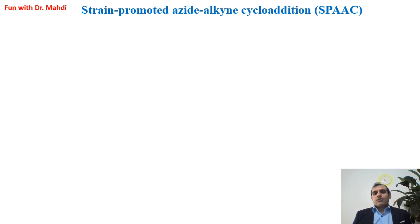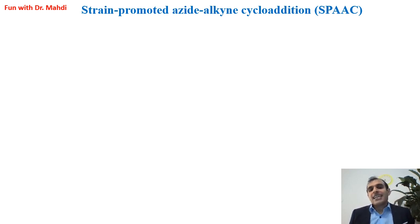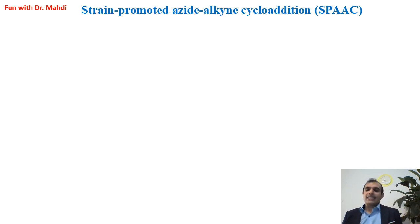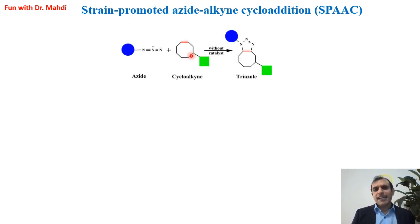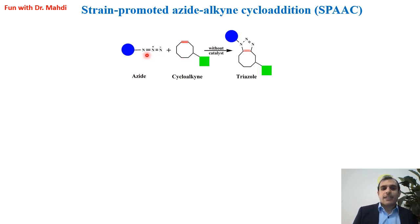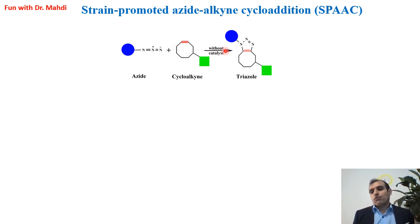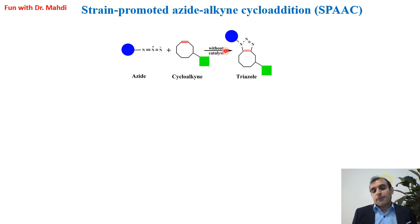I suggest using another type of click reaction: strain-promoted azide-alkyne cycloaddition, or SPAAC. What's the difference between SPAAC and CuAAC? When we replace linear alkyne with a cycloalkyne, we call it SPAAC. Again, it's a reaction between azide and alkyne, but here we have cycloalkyne. In this case, we don't need to use copper as a catalyst.